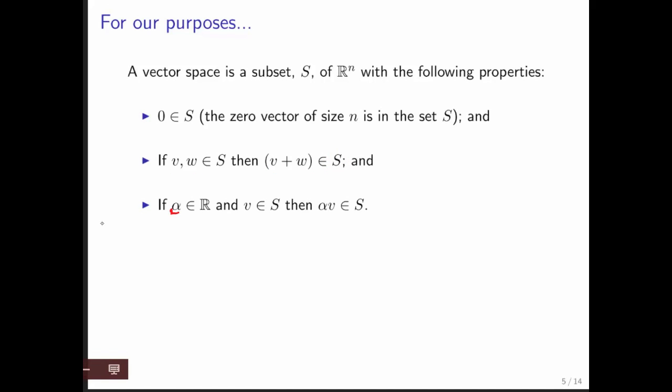Third, if you have an element in R, in other words if you have a real number, and you have a vector in this set S, then if you multiply that vector by alpha, then you end up back in that set. The mathematicians would say that S is closed under addition and scalar multiplication.